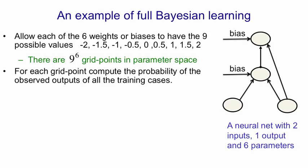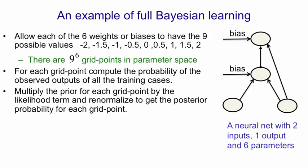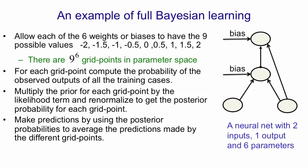For each of those grid points, we'd compute the probability of the observed outputs on all the training cases. We'd multiply by the prior for the grid point, which might depend on the values of the weights, for example. And then we'd renormalize to get the posterior probability over all the grid points. Then we make predictions using those grid points but weighting each of their predictions by its posterior probability.